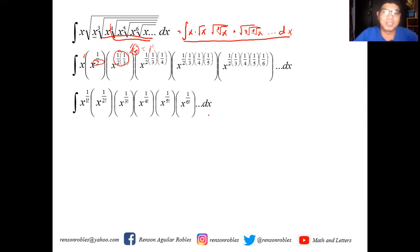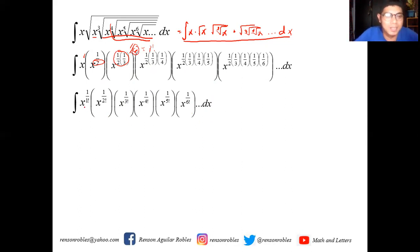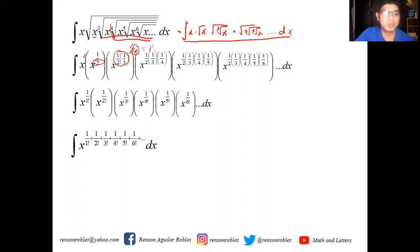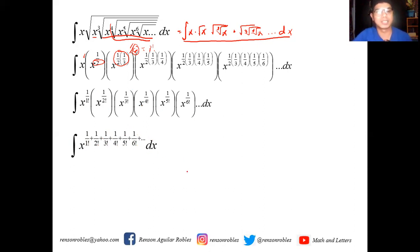Continuing, we have x raised to 1 over 7 factorial, running until infinity, then dx. By applying the laws of exponents, since we have similar bases we can add the powers, and we can write it as x raised to the quantity: 1 over 1 factorial plus 1 over 2 factorial plus 1 over 3 factorial plus 1 over 4 factorial plus 1 over 5 factorial plus 1 over 6 factorial plus terms running until infinity, then dx.